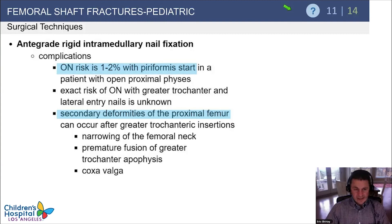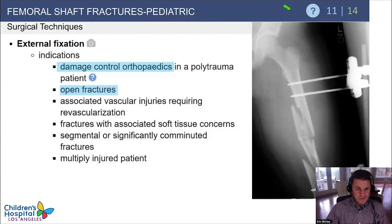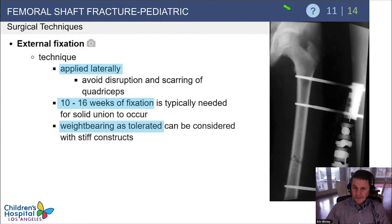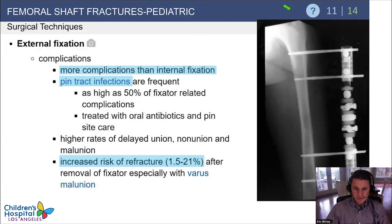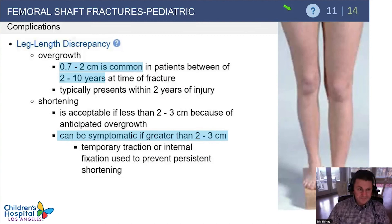Complications of intramedullary nails include AVN risk of 1 to 2 percent with a piriformis start; the rate with trochanteric or lateral entry nails is not completely clear. External fixators are less commonly used now but remain indicated for damage control orthopedics, open fractures, and femur fractures with vascular injuries. They stay on 10 to 16 weeks and have more complications than internal fixation, particularly pin track infections. The most important complication of external fixation is refracture after removal.